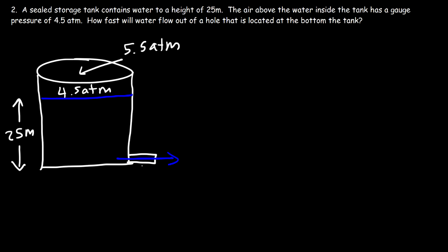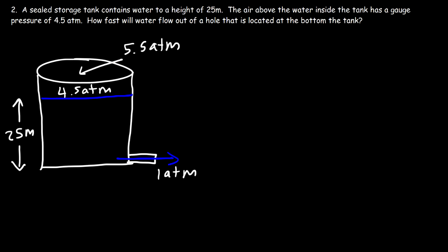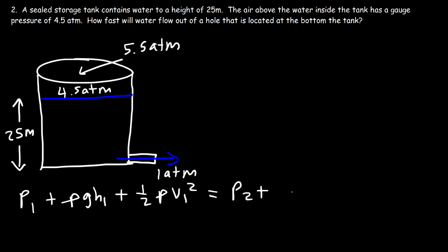When the water leaves the tank, it's exposed to an absolute air pressure of 1 atm. The difference in pressure is 4.5 atm, which is the important value. So in this case, we need to use Bernoulli's equation: p1 plus ρgh1 plus 1/2 ρv1² equals p2 plus ρgh2 plus 1/2 ρv2².